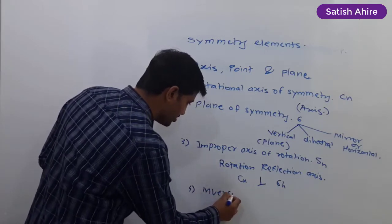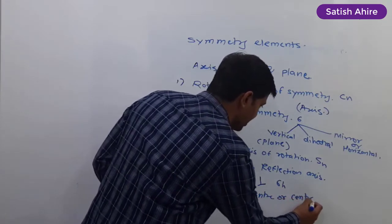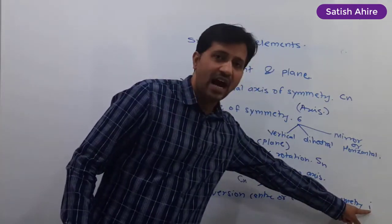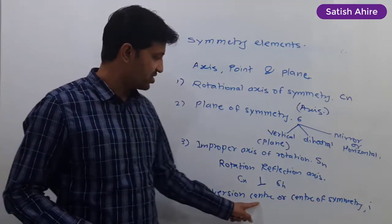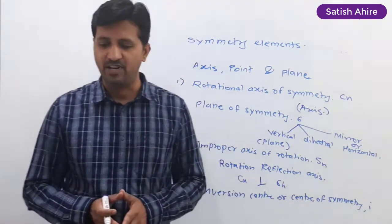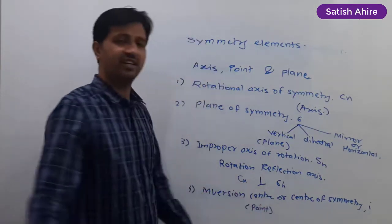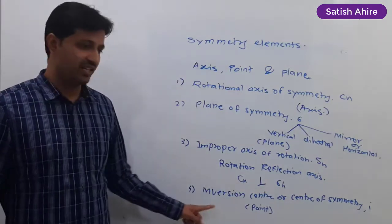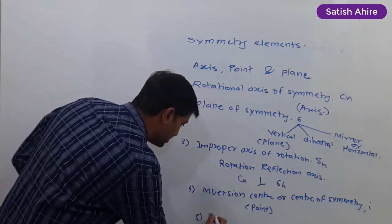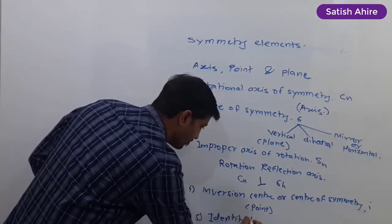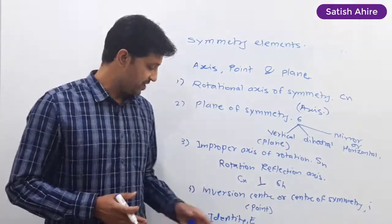The fourth symmetry element is the inversion center, or center of symmetry. The small letter i is used to represent the presence of an inversion center. It involves a point as its geometrical entity.